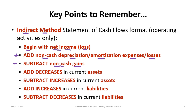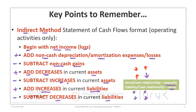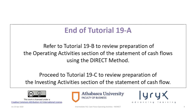For balance sheet changes: decreases in current assets are added; increases in current assets are subtracted. Increases in current liabilities are added; decreases in current liabilities are subtracted. This is because the asset-cash relationship is opposite, whereas the liability-cash relationship is the same. This concludes Tutorial 19a. You should review Tutorial 19b for the operating activity section using the direct method, then proceed to Tutorial 19c for the investing activity section of the cash flow statement.